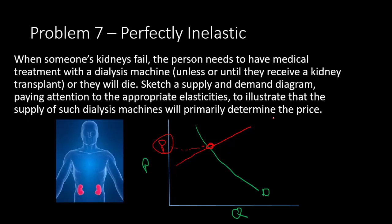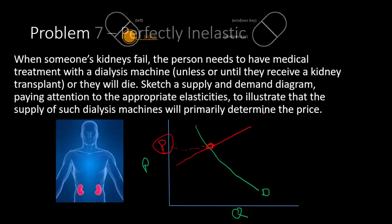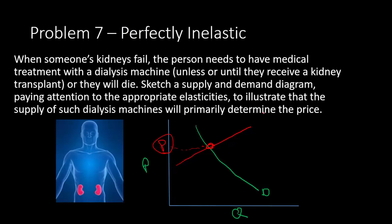In practice, the kidney market is heavily regulated. In the United States you cannot sell kidneys — you donate them. This is a normative economic decision: because demand is so inelastic, society has decided not to allow a market for organs at all. Whether that's good or bad depends on your perspective — it does mean waiting on a transplant list.